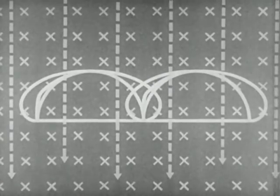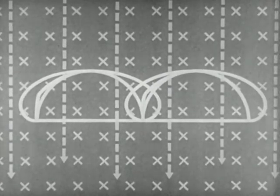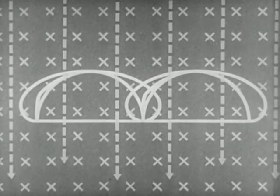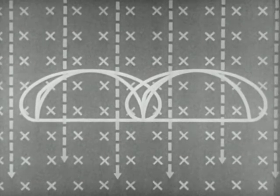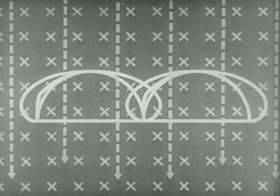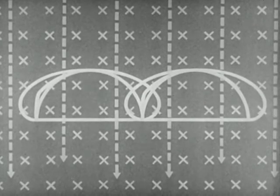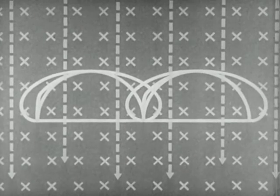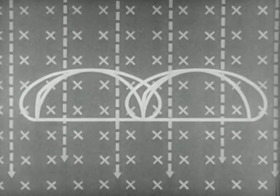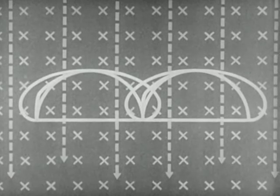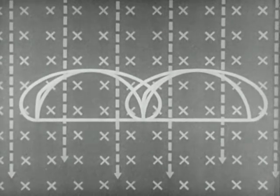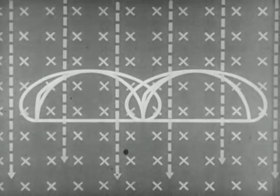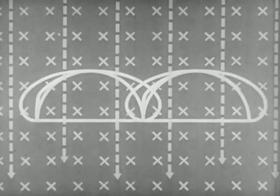These four orbits, or cycloids as they are called, are typical of all which can occur in uniform and mutually perpendicular electric and magnetic fields. The horizontal distance covered by each electron in one cycle is the same, and the time required to complete the journey is the same. Now let's apply this knowledge to the operation of a magnetron.